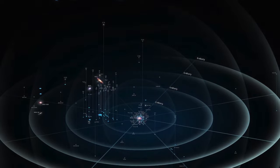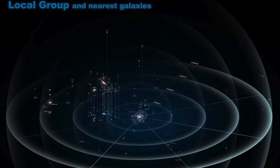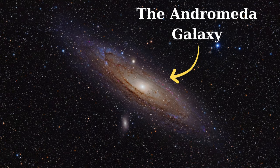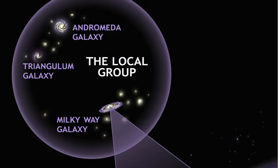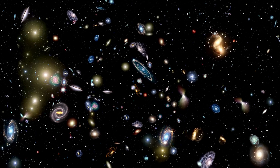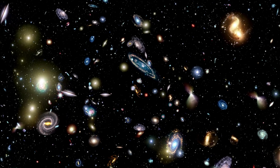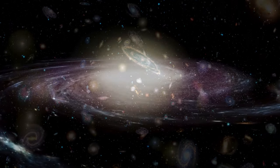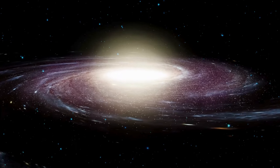It's part of the local group of galaxies and is on a slow collision course with the Andromeda galaxy, which is expected to happen in about 4 billion years. Despite its vast size, the Milky Way is just one of billions of galaxies in the observable universe, each with their own vast scales and stories.